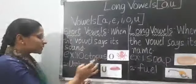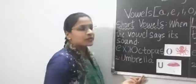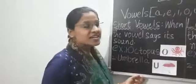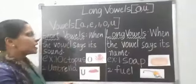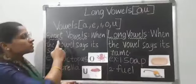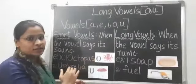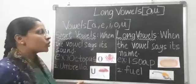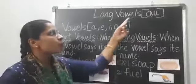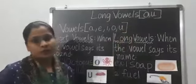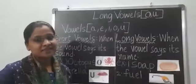Octopus and umbrella are short vowels. I hope you understood about short vowels and long vowels — what is the difference, and what do you mean by long vowels of O and U. Thank you children. Bye-bye. Take care.